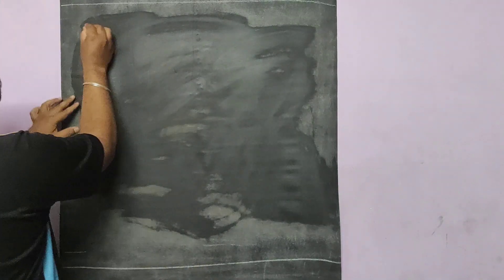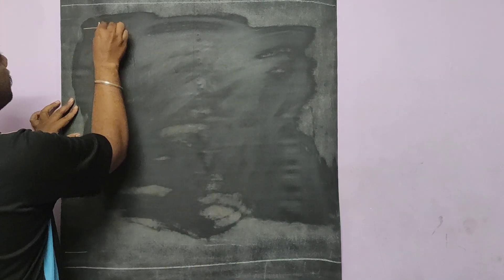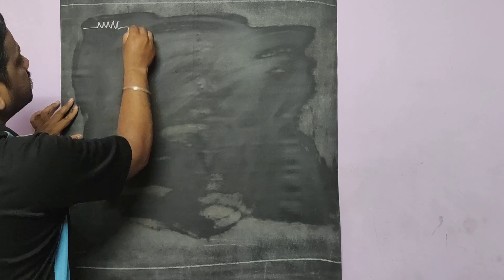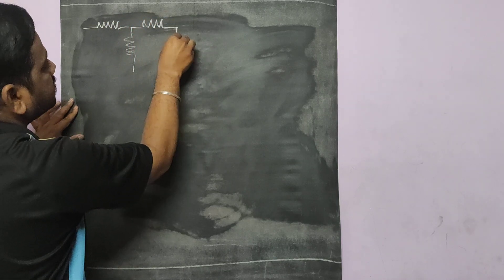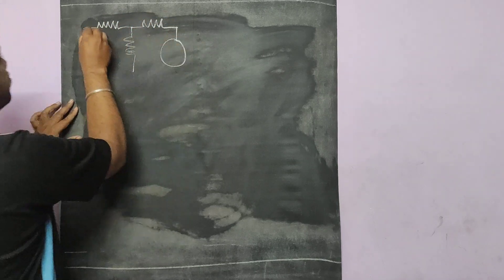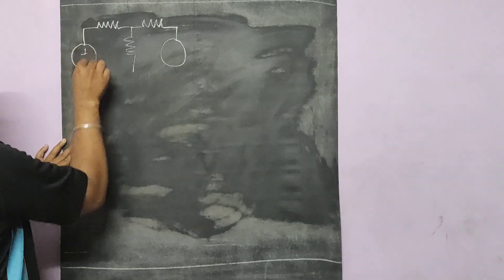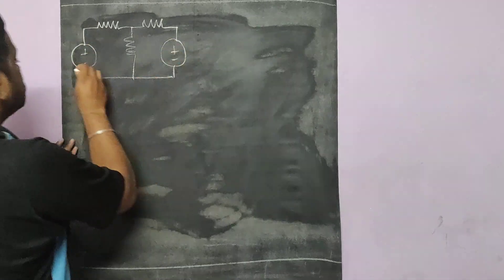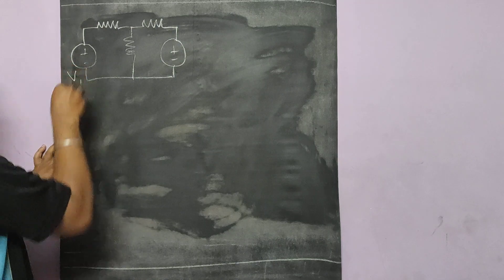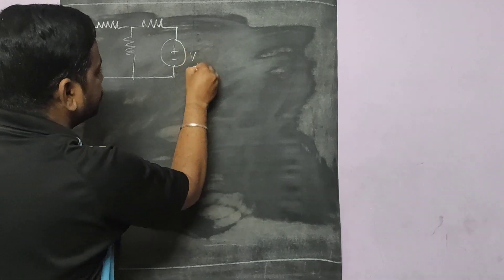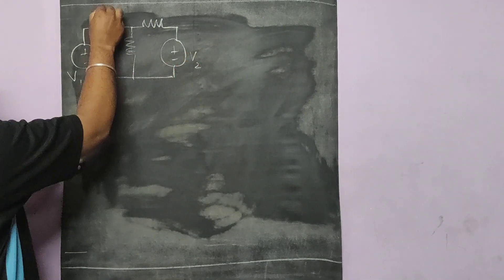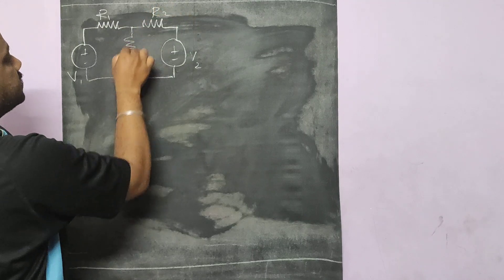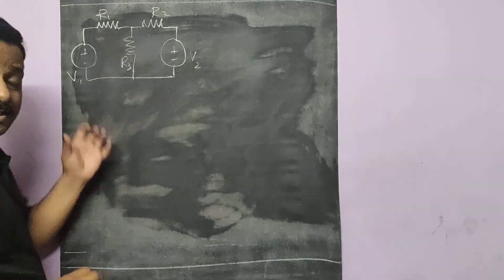Let us take an example — an electrical network with some resistances and sources. We have source V1, source V2, and resistances R1, R2, and R3.